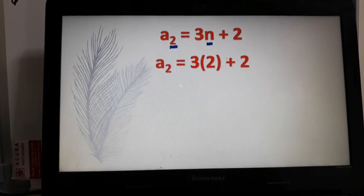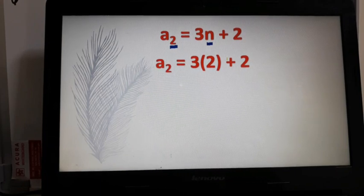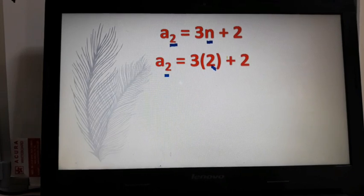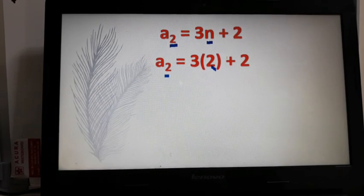So a_2 equals 3 times 2 plus 2. Again, where did the 2 come from? It came from here. Okay, so let's continue.